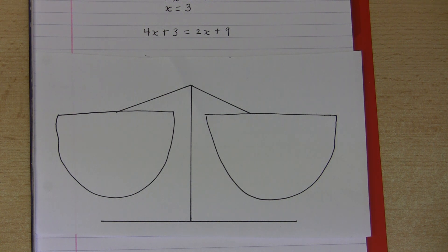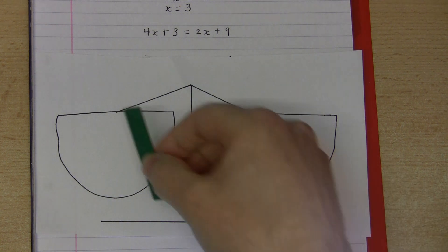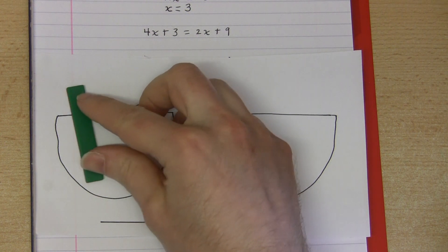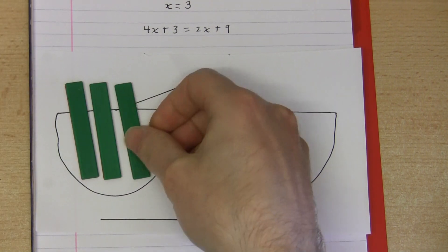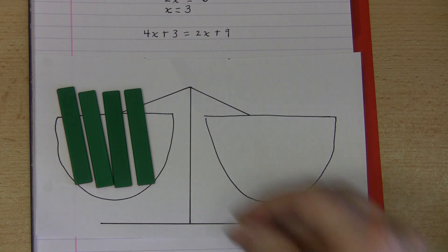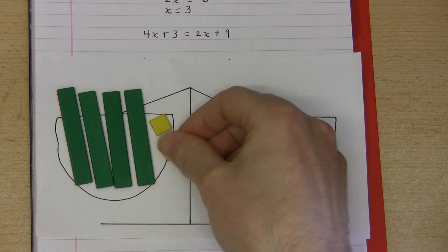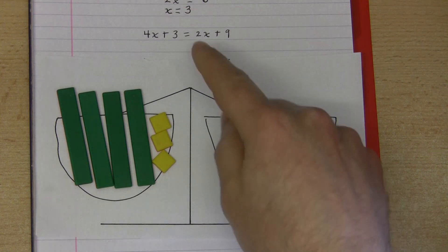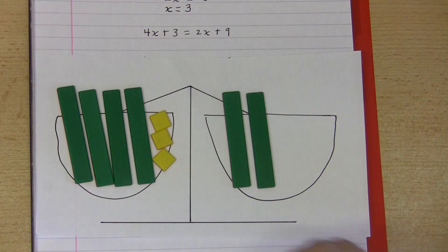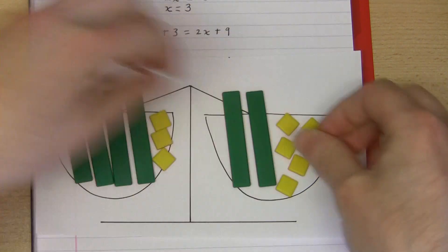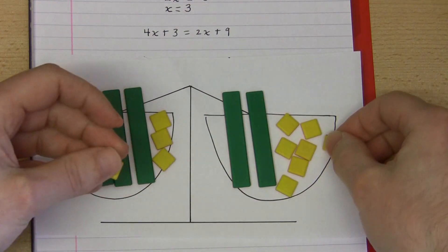And I can use some manipulatives, some algebra tiles, to show what is going on. Now let the variable x here be represented by one of these green rods. On the left hand side of the equation I have 4x, so on the left hand side of this balance scale I will place four of these green rods. Now also on the left hand side I have three units. So I will use this yellow square algebra tile to represent a single unit. So I will require three of them in the left hand side of the scales here. Now on the right hand side we have 2x so I need to place two green rods in the right hand side of the scales and also nine units. So I'll try and fit in nine of these square tiles into the right hand side of the scales.